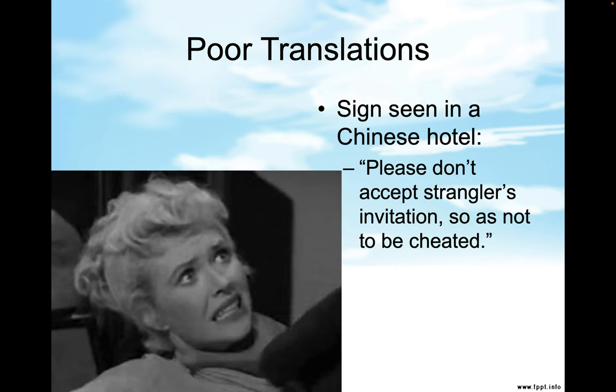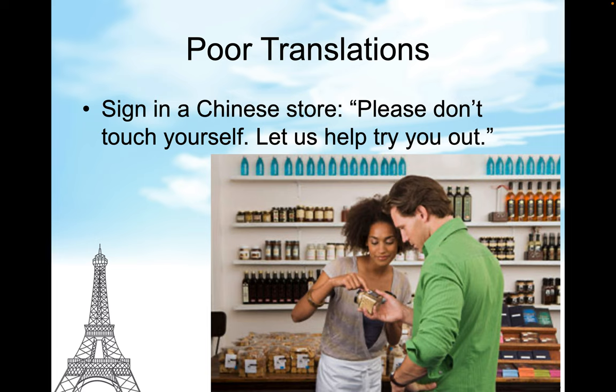We can see poor translations all around the world. A sign seen in a Chinese hotel reads: 'Please don't accept strangers' invitations so as not to be cheated.' A sign in a Chinese store reads: 'Please don't touch yourself. Let us help try you out.' What they meant to say was please don't touch the merchandise yourself — please let us help you.